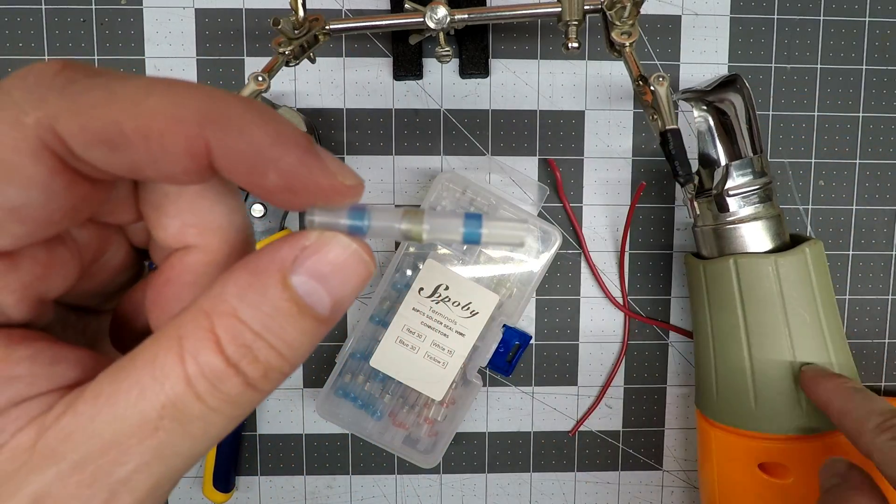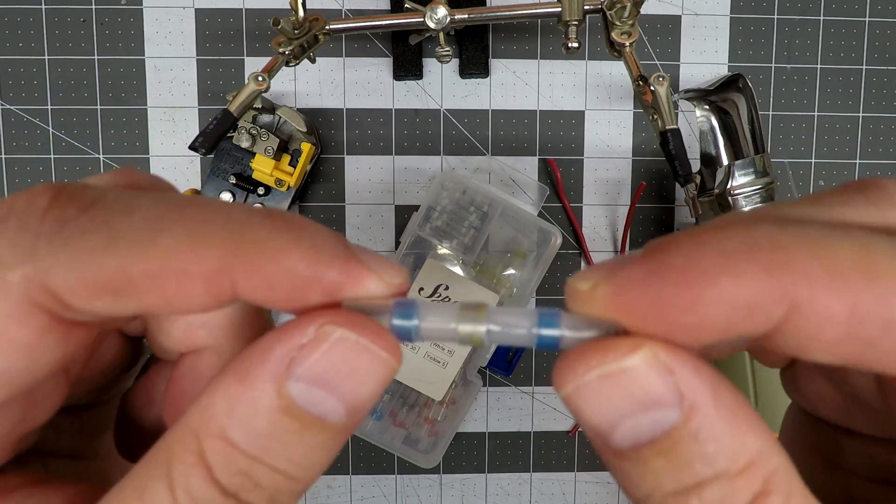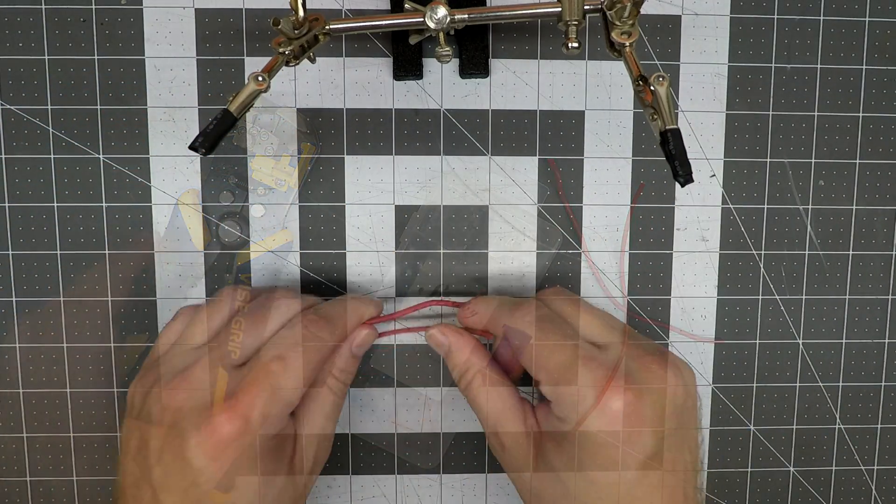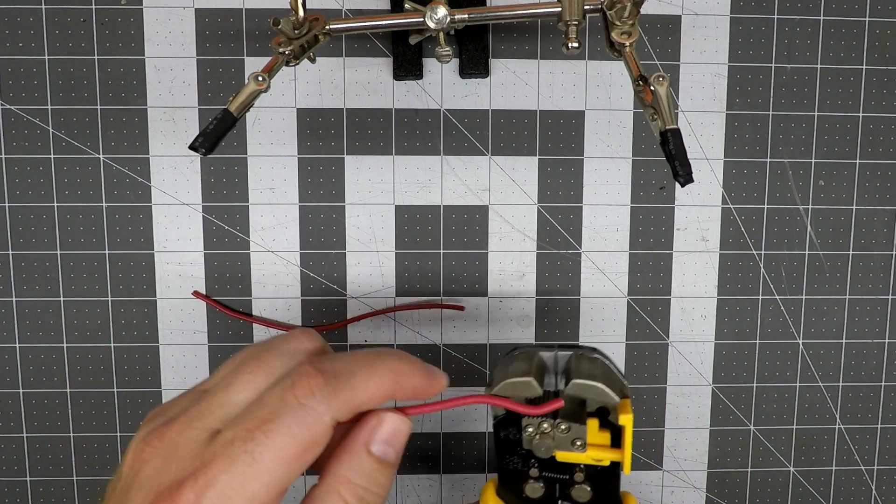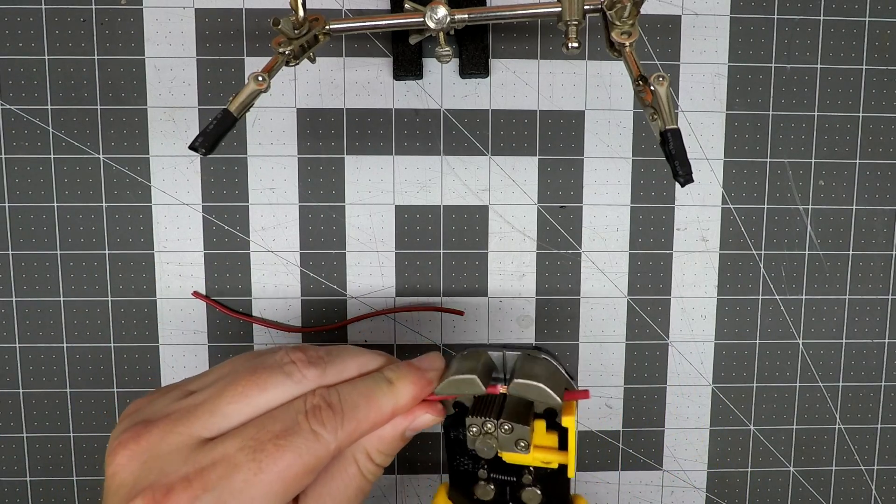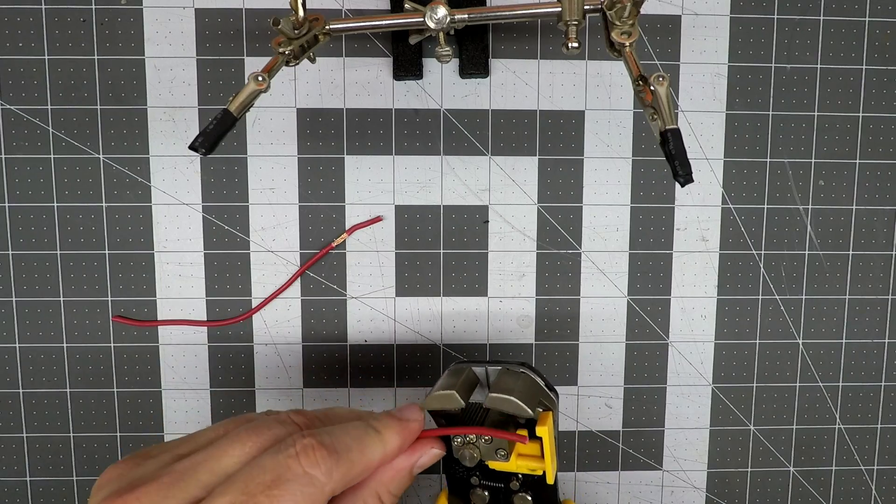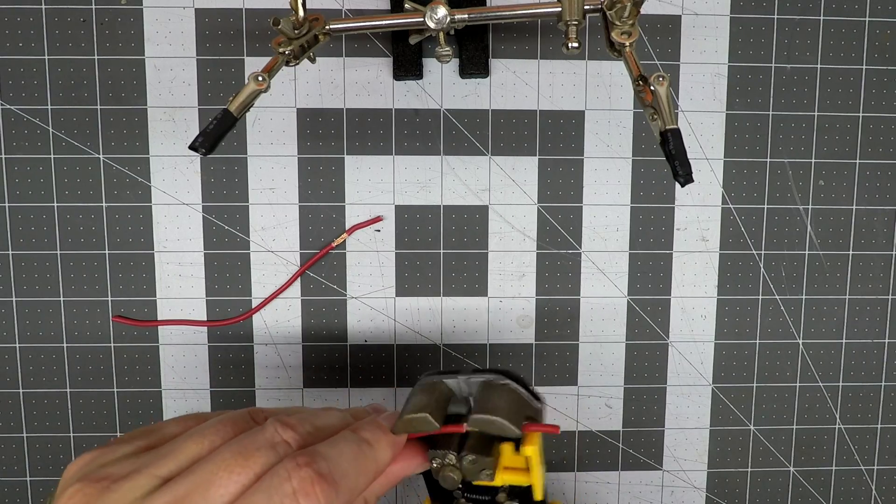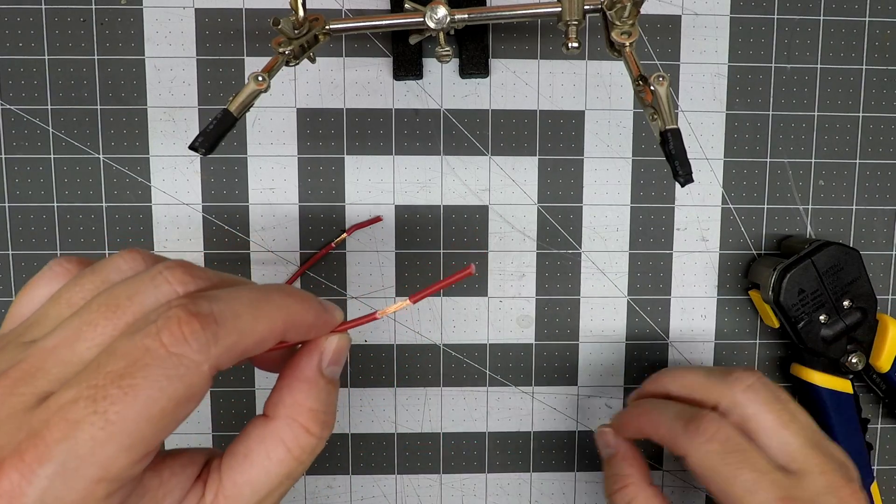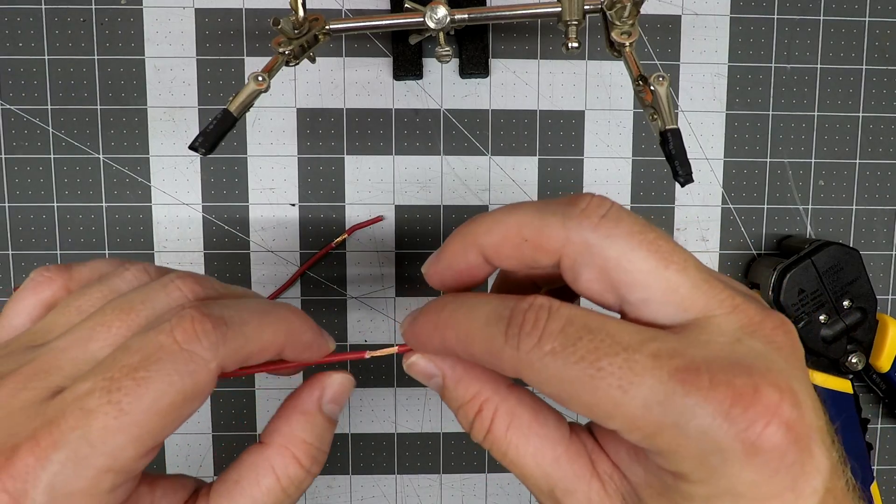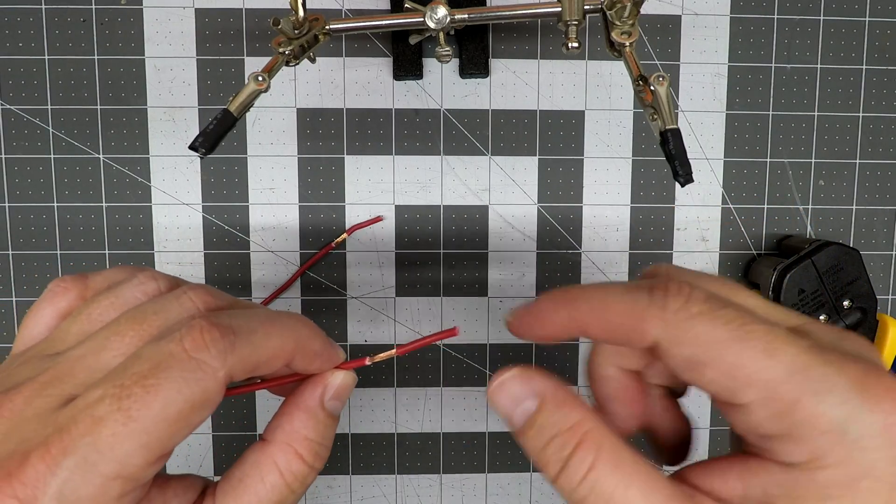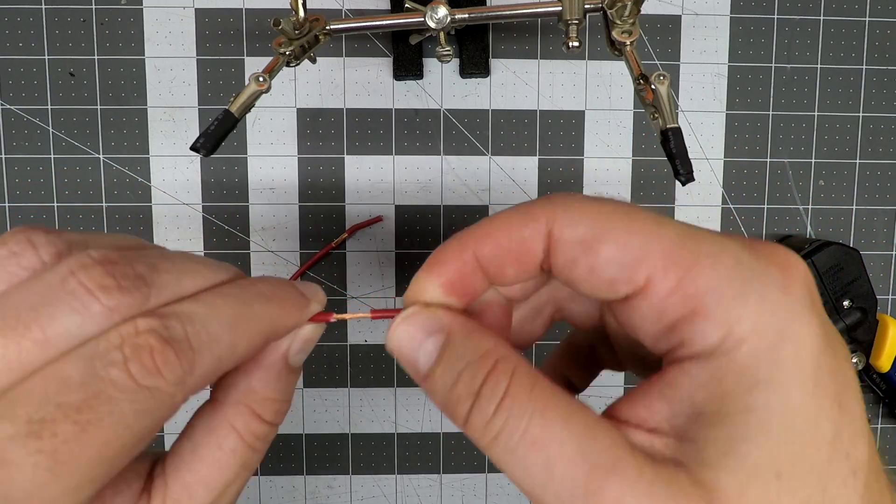First thing we're going to do is we're going to strip our wires. Per the comments in the video that I made before, instead of pulling the insulation off and then twisting it, use the insulation to do the twisting. That way it's nice and clean.